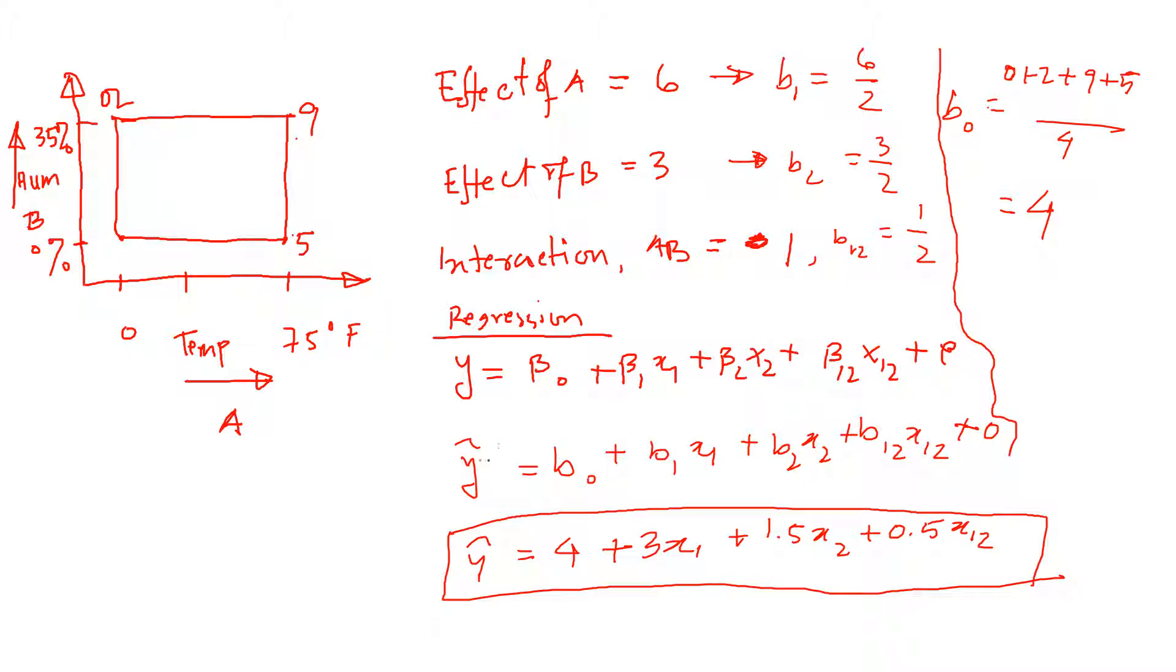So now these estimates, and then the estimated y response for comfort is B0 plus B1 x1 plus B2 x2 plus B12 x1 x2, and then estimated error is 0 basically.